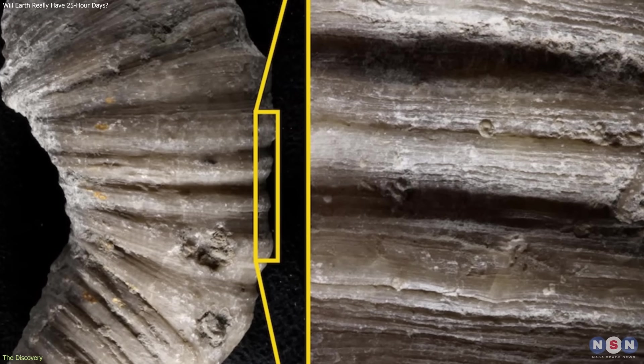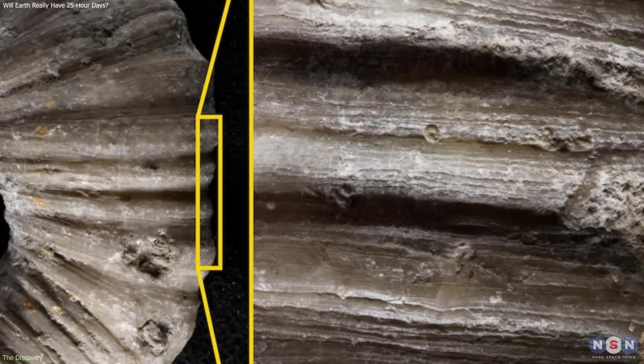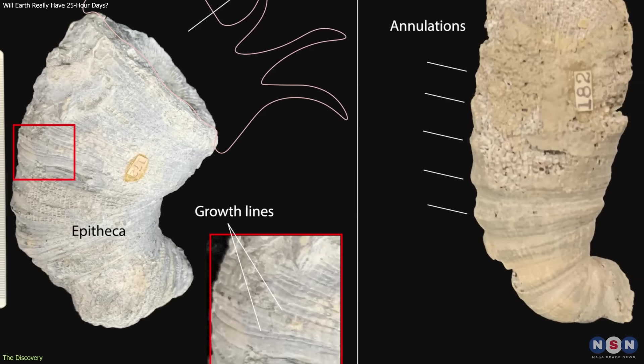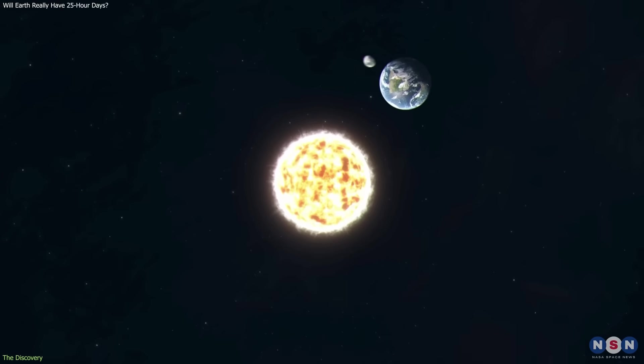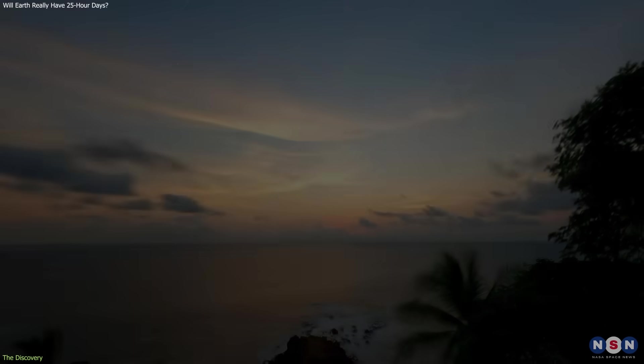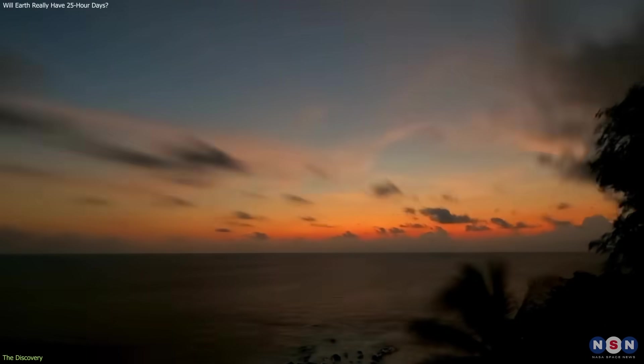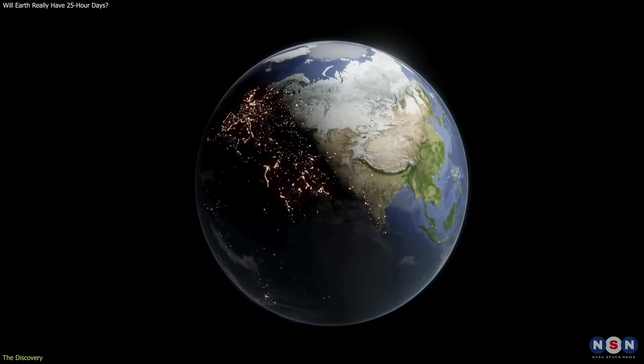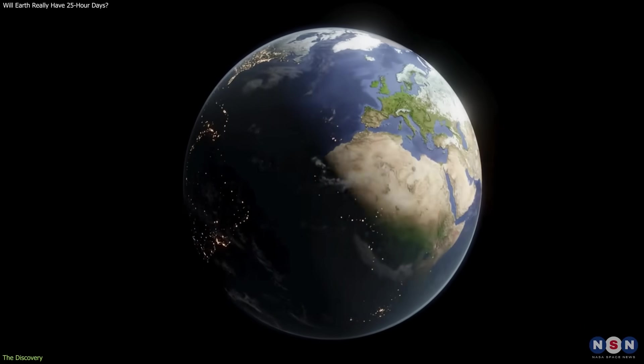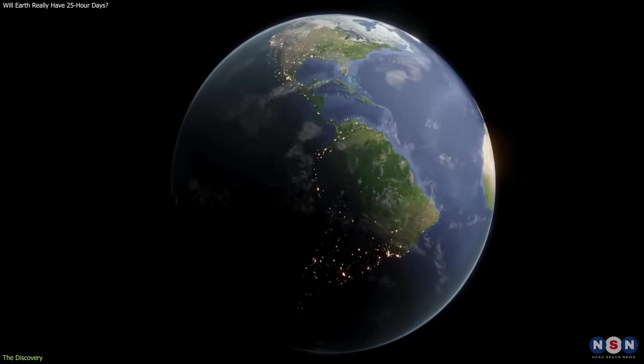Fossilized growth patterns in ancient corals and shells show that hundreds of millions of years ago, Earth completed more rotations per year. The planet still orbited the Sun once annually, but individual days were shorter. What has renewed attention to this topic is the ability to link subtle changes in rotation to observable processes happening today.